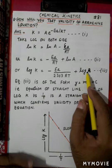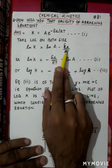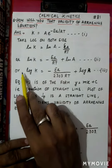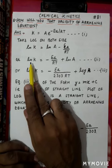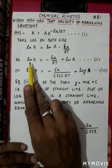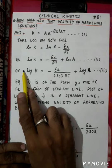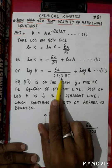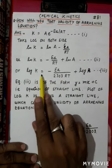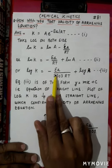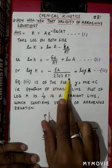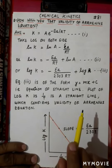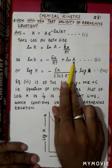The Arrhenius equation: ln k, which is 2.303 log k, is equal to minus Ea upon 2.303RT plus log A. This will be equation 3. We brought log A here in equation 2 because we needed to show the equation equal to y = mx + c.